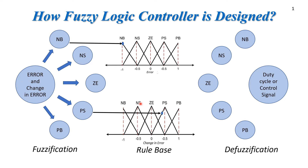The rule base determines which combination will bring the system to the desired state. So let's say for this particular condition, that combination is a positive small output — we want a positive small output.